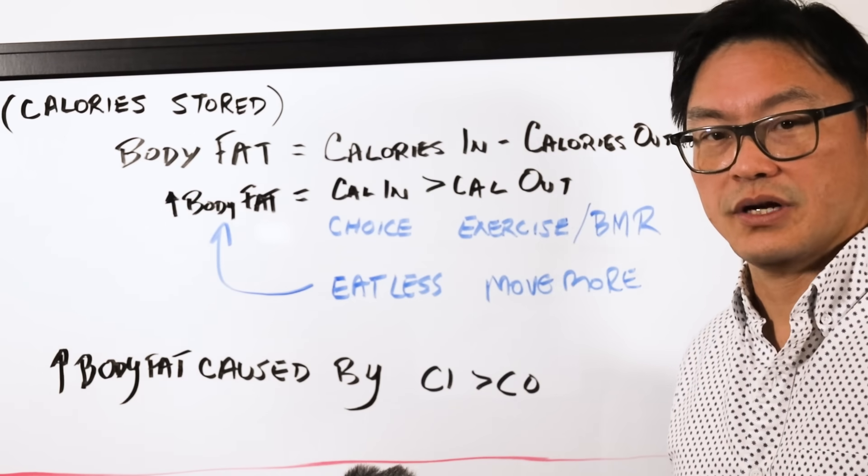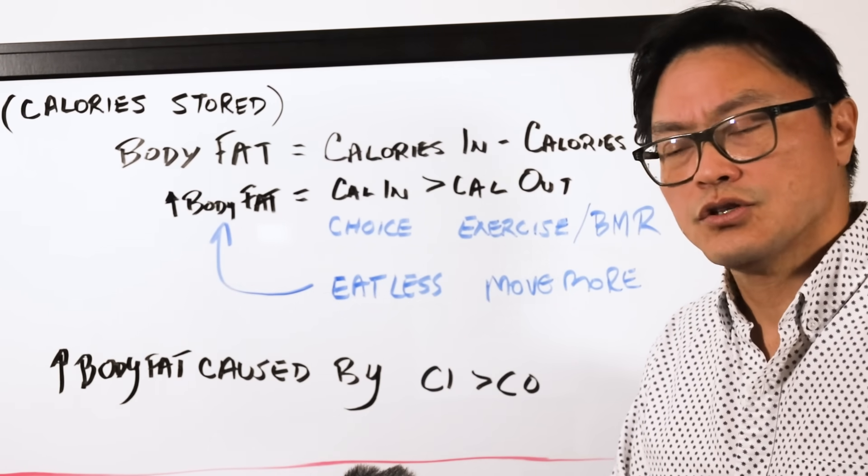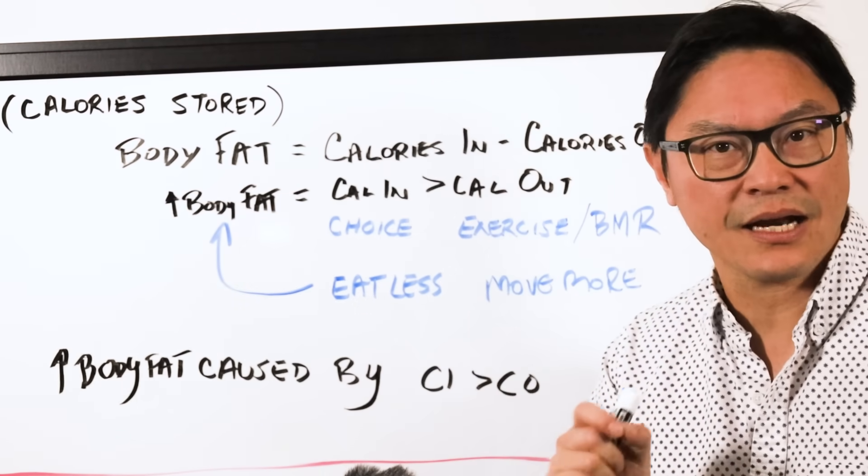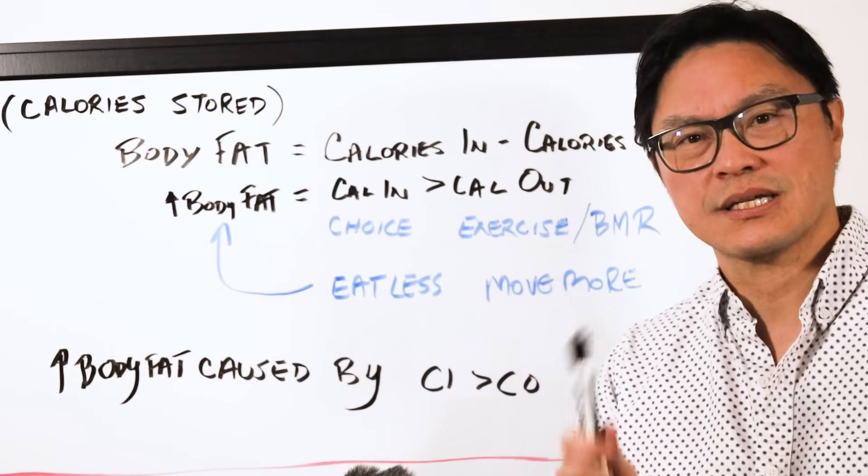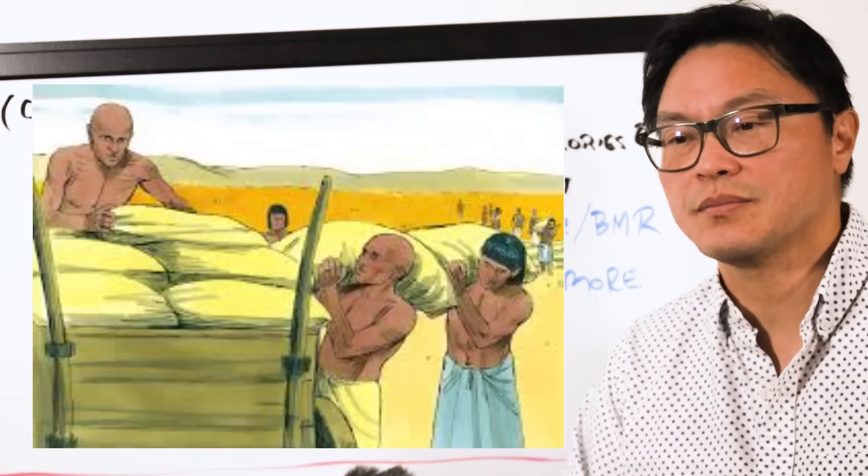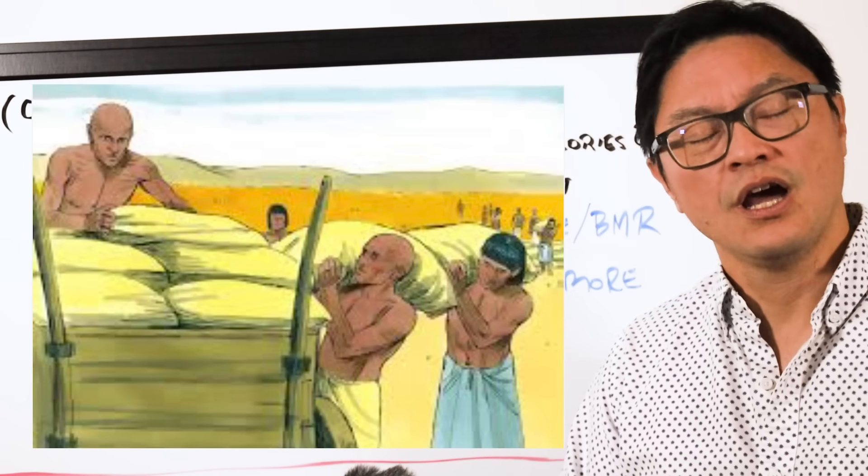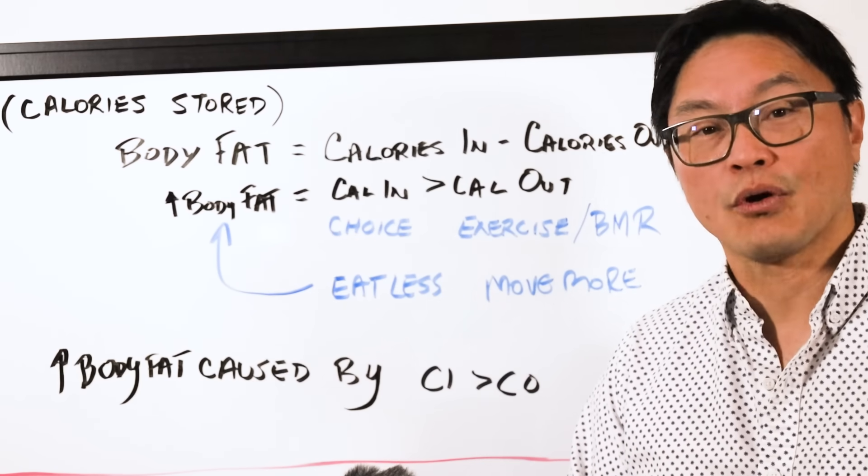If they carried too little body fat, they wouldn't be able to survive famine or winter. So how much body fat an animal carries is of vital importance, and therefore very tightly controlled. In the biblical story of Joseph, they talked about seven years of plenty. What they didn't talk about was an ancient plague of morbid obesity.